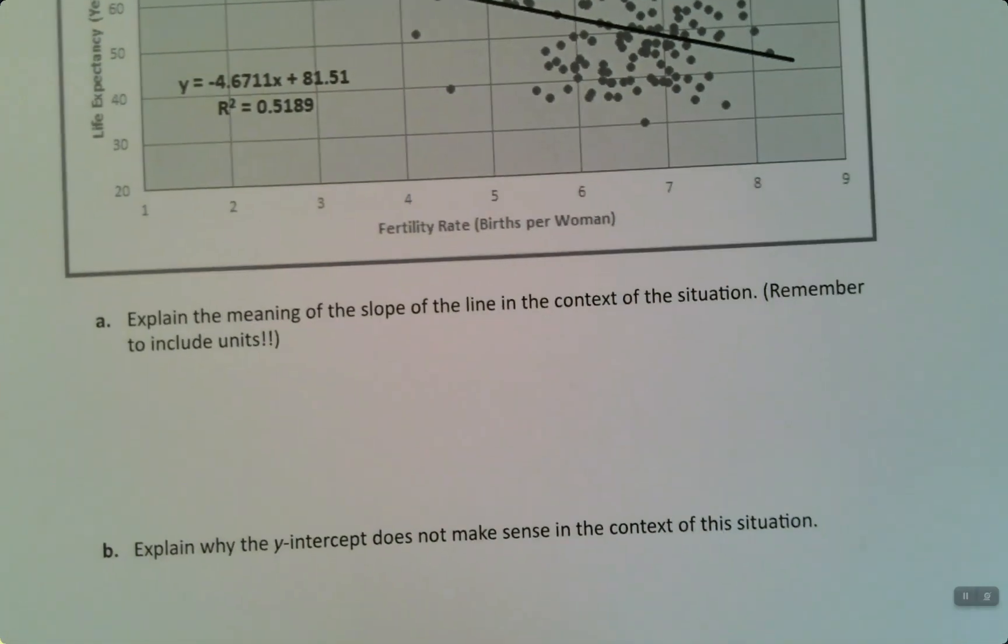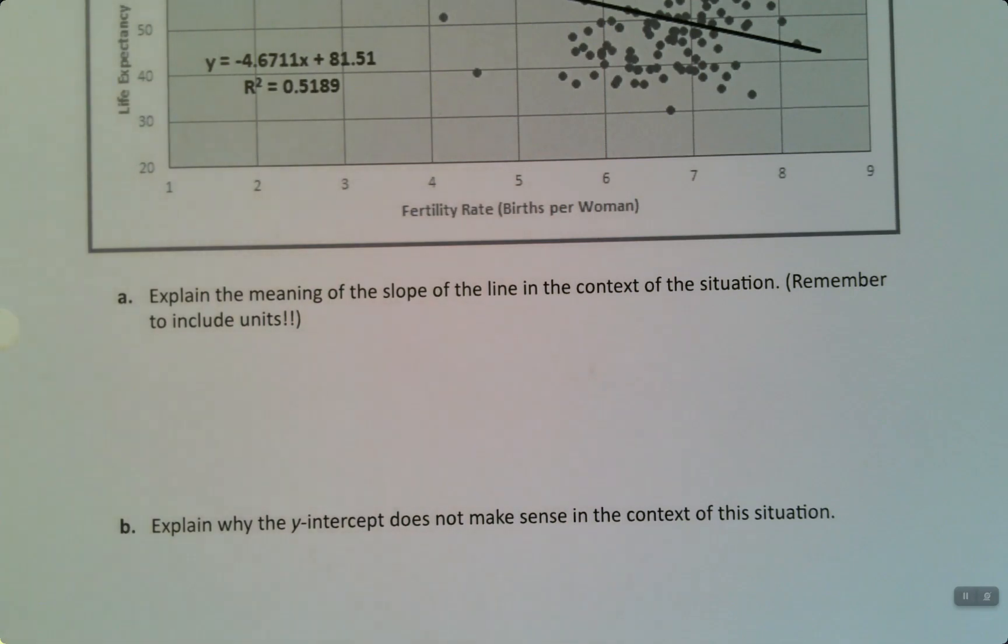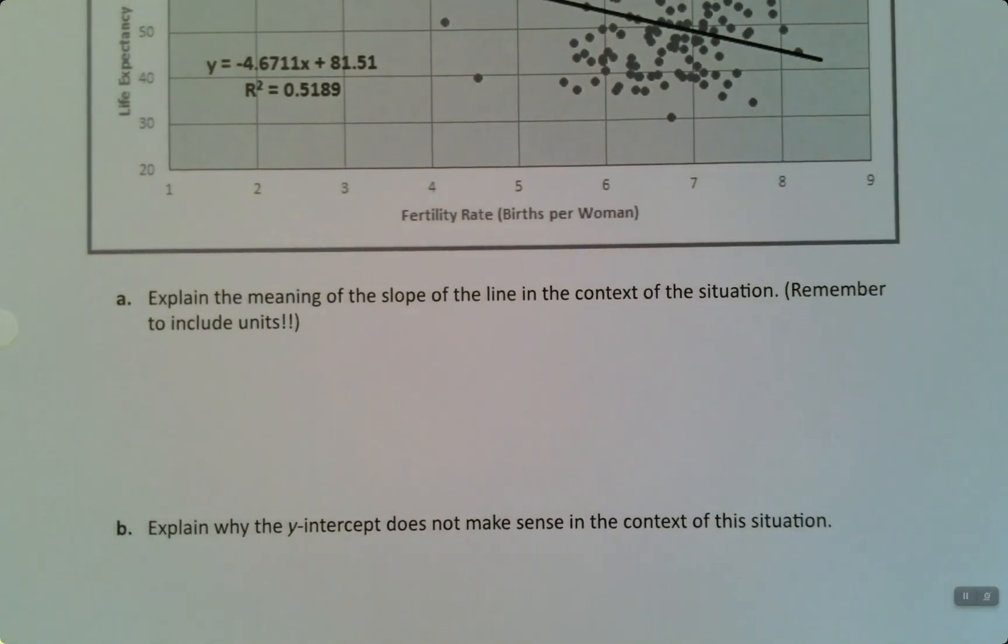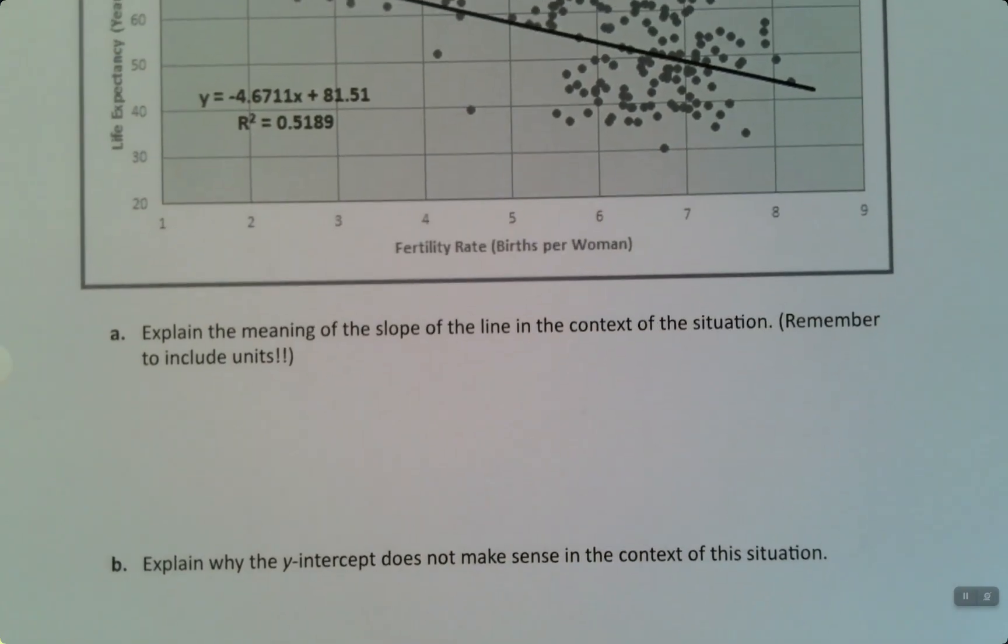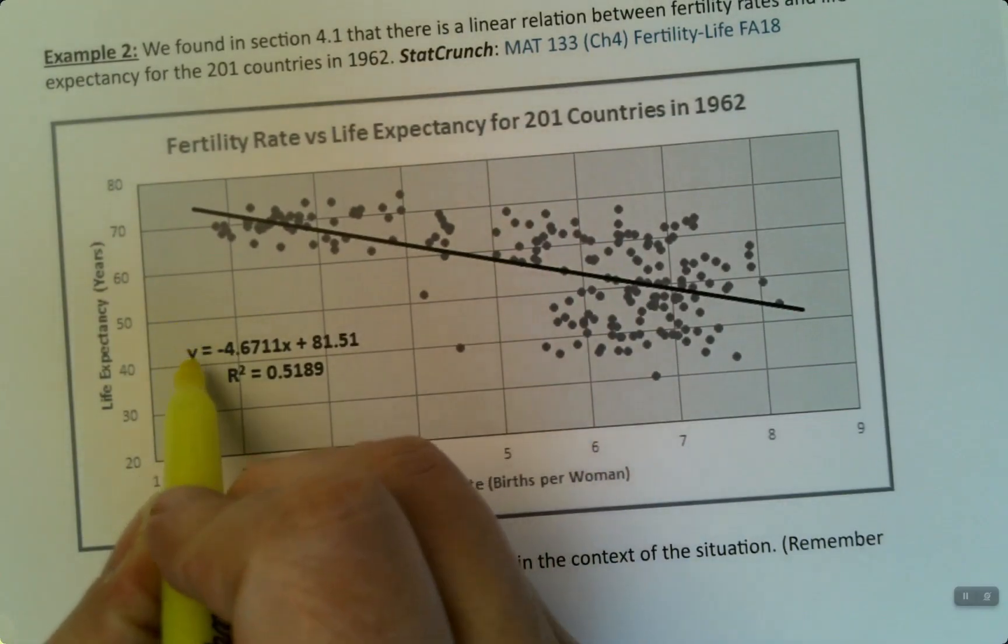This is the fertility rate and the life expectancies for the countries in 1962. Now the first thing I'm asking you to do is to explain the meaning of the slope in the context of the situation, and remember to include units. Well, let's start off before I go back and grab the script. What's the slope? Where's the slope? You don't expect me to put all those dots into a computer, right? And the answer is nope. It was given to you right here.